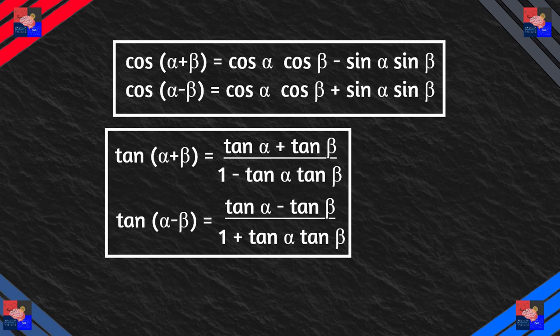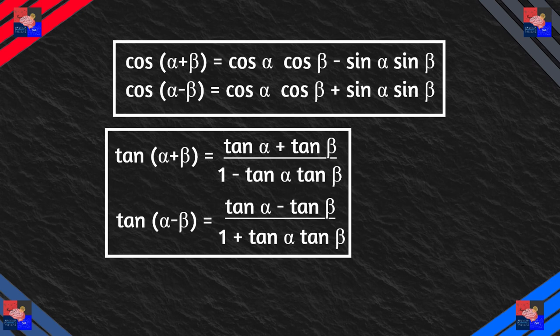These formulas are different for cosine. Cosine(α + β) equals cosine α cosine β minus sine α sine β, and cosine(α − β) equals cosine α cosine β plus sine α sine β. For tangent, tangent(α + β) equals (tangent α + tangent β)/(1 − tangent α tangent β), and tangent(α − β) equals (tangent α − tangent β)/(1 + tangent α tangent β). That's our first set: the sum and difference formulas.